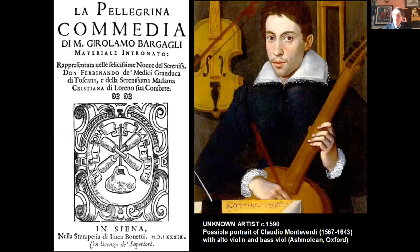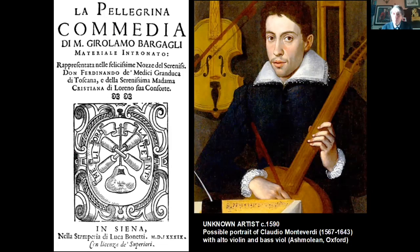This is small numbers. You then suddenly find the bigger courts are putting on larger festivities, and this is where we have a big gap because I can't visually show you exactly what these were like. La Pellegrina — a series of five intermedi as part of the festivities of a Medici wedding in Florence — the libretto is published, as you can see here in Siena, 1589, but with no visual record. Alongside Claudio Monteverdi, probably — this is the disputed portrait in Oxford which we'd love to be him.